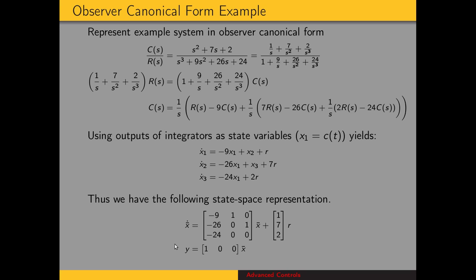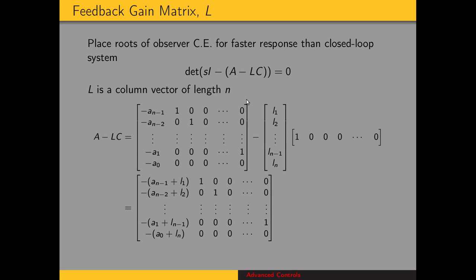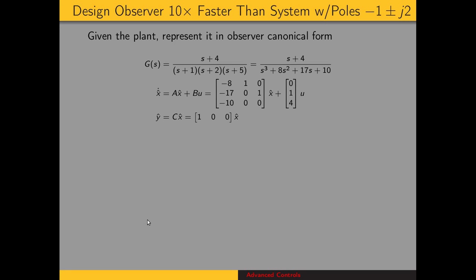Now we'll look at how to place the roots of the characteristic equation for the observer. Here's the characteristic equation again, and we're going to look at the vector L. L is a column vector of length n for an nth order system. Here's the matrix A minus LC, where A comes from the observer canonical form, as does C, and L is this vector of gains. A minus LC looks like the left companion form, similar to what we had for controller design. When we take the determinant of this matrix, we have these terms on the first column as coefficients.